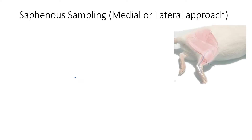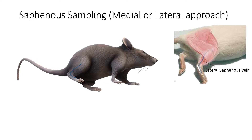The next method is saphenous sampling. We shave the leg of the animal and then locate the lateral saphenous vein. Once we locate the lateral saphenous vein, we collect the blood with the help of an injection.